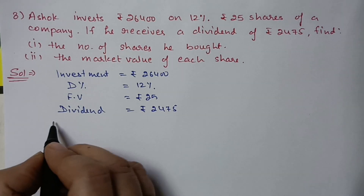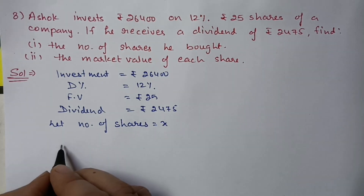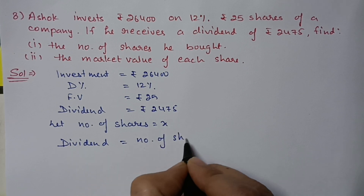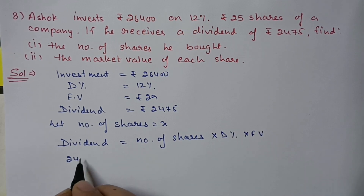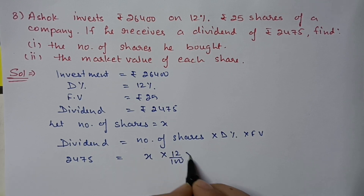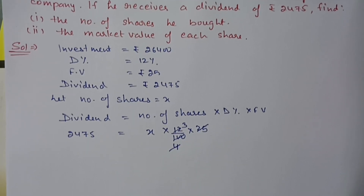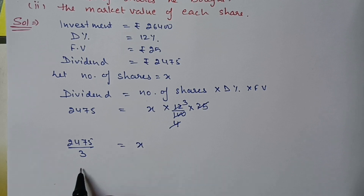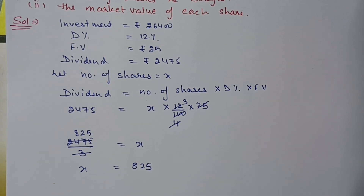Let the number of shares be X. Dividend equals number of shares multiplied by dividend percentage multiplied by face value: 2,475 = X × 12% × 25. Cancelling 25 and simplifying — shifting 3 to the other side — X equals 825. So Ashok bought 825 shares.